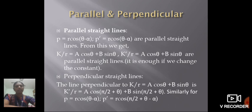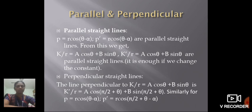For parallel straight lines: P equal to R cos(theta minus alpha) and P dash equal to R cos(theta minus alpha). From this, K by R equal to A cos theta plus B sin theta, and K dash by R equal to A cos theta plus B sin theta. In this case, it is enough to change the constants alone. For perpendicular straight lines, the line perpendicular to K by R equal to A cos theta plus B sin theta is K dash by R equal to A cos(π/2 plus theta) plus B sin(π/2 plus theta). Similarly, P dash equal to R cos(π/2 plus theta minus alpha).